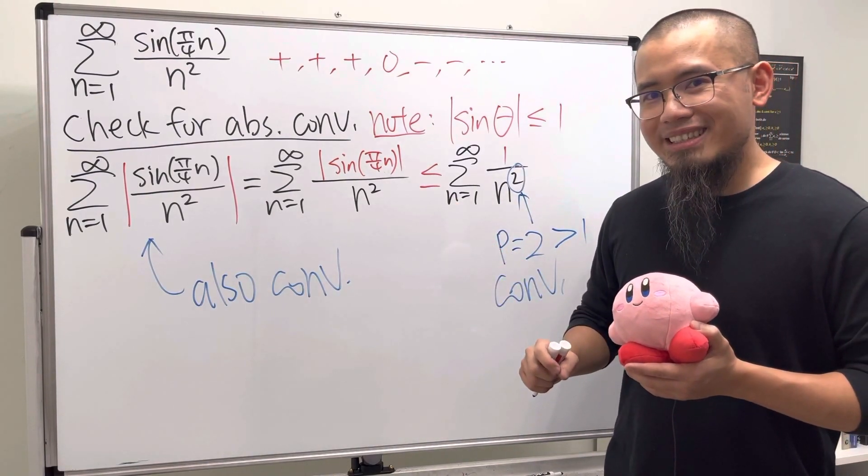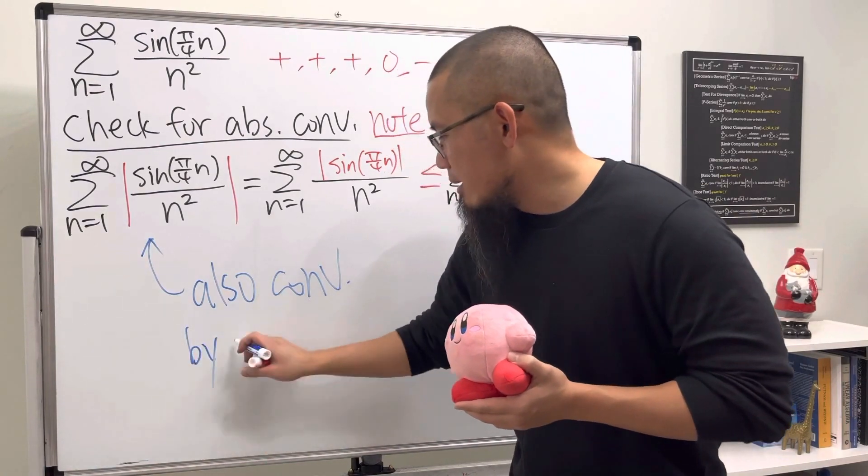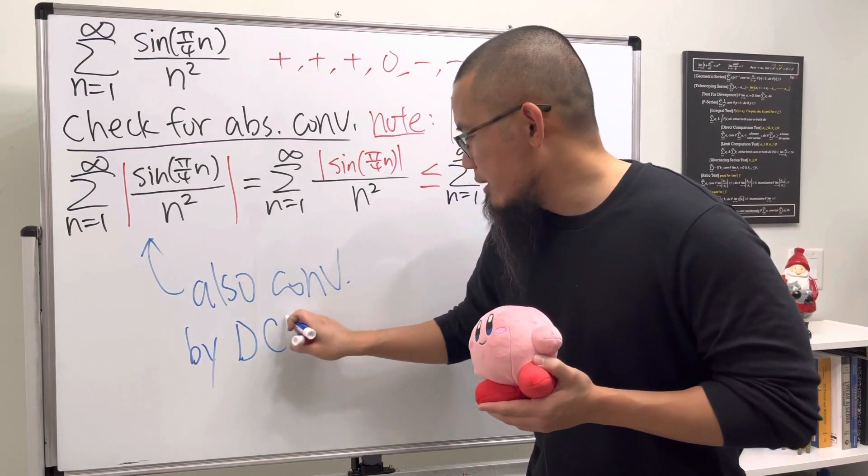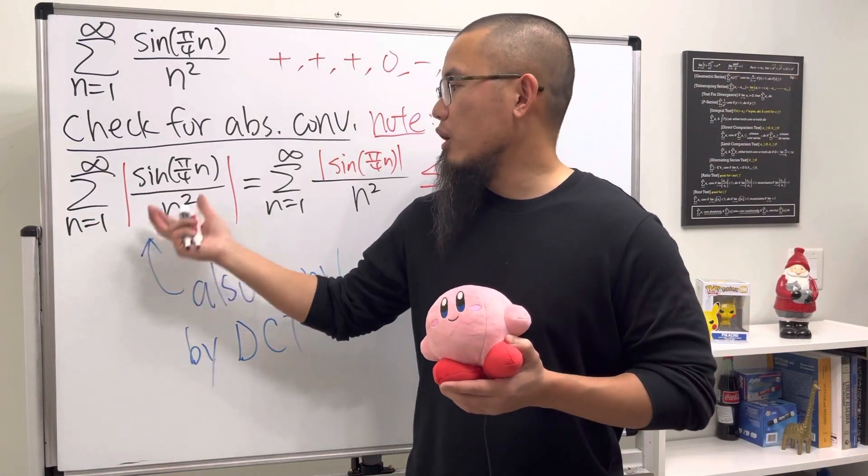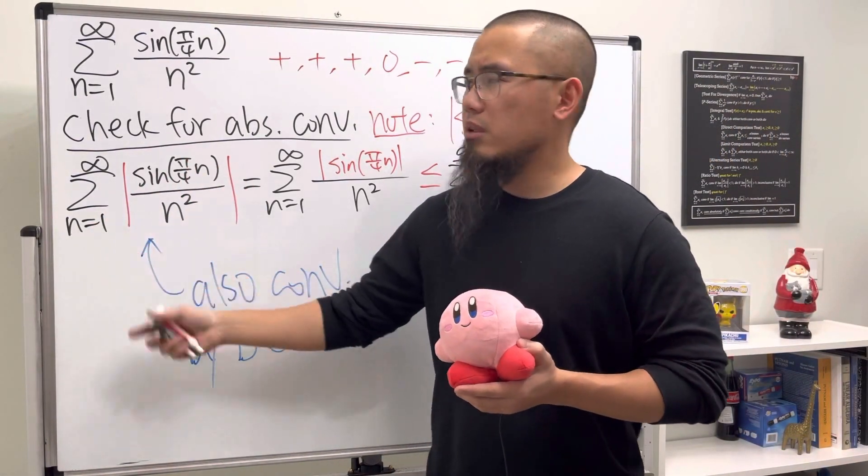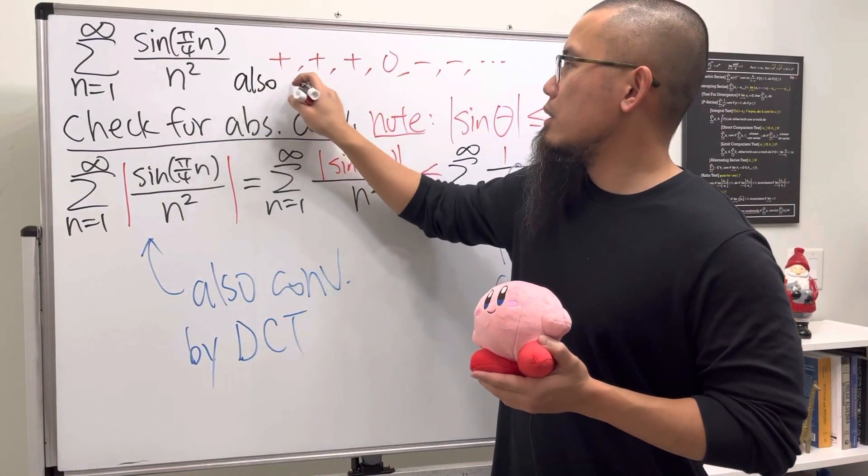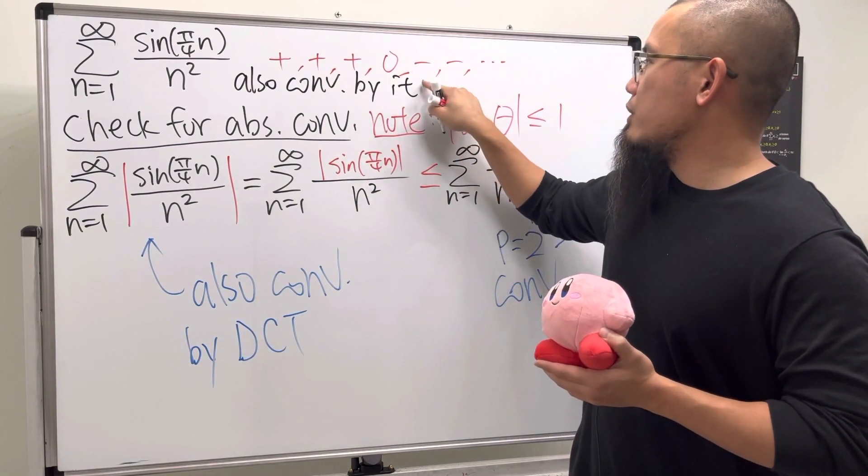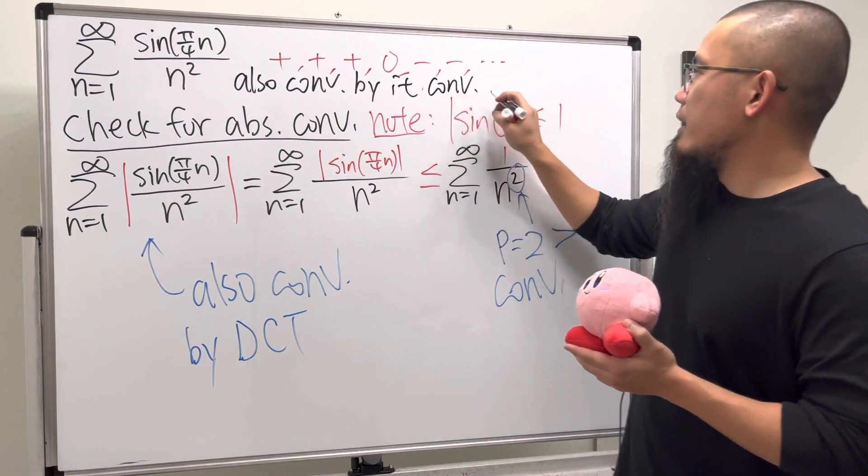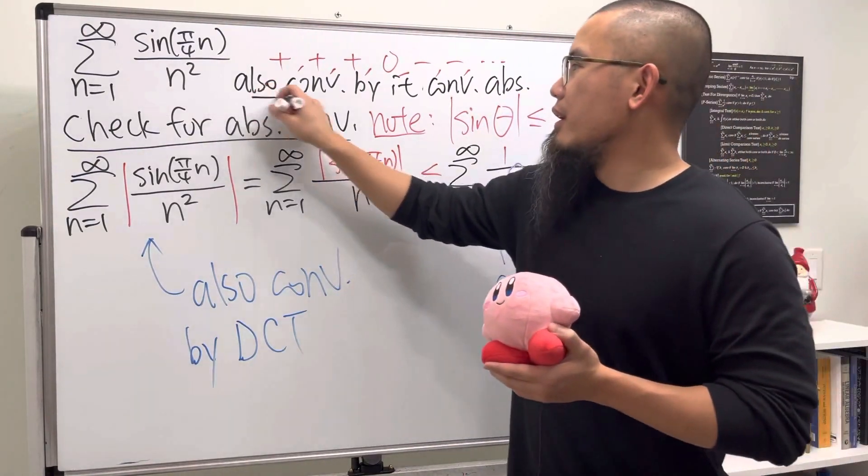This is the direct comparison test. Let's write that down. As you can see, if the absolute value version of this series converges, the original version must also converge because it converges absolutely. That's it.